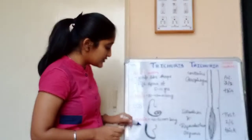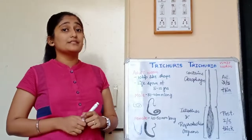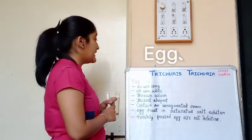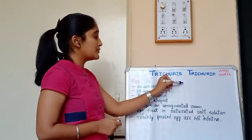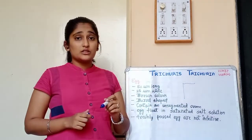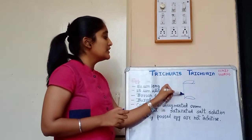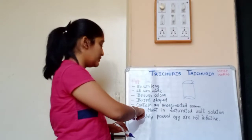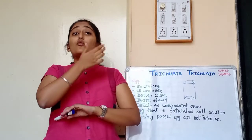The male's caudal extremity is J-shaped or curved. The female is oviparous. The eggs are 50 micrometers long and 25 micrometers wide, brown in color when bile-stained, and barrel-shaped. They contain an unsegmented ovum and float in saturated salt solution. Freshly passed feces does not cause infection.